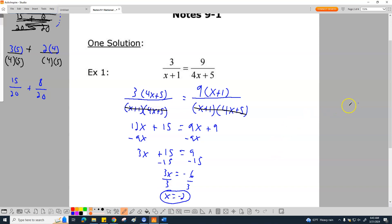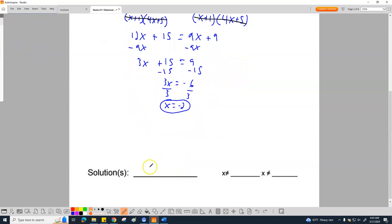I'm going to divide the 3 on both sides. x equals negative 2. x equals negative 2 for this solution. That's what this equals to.